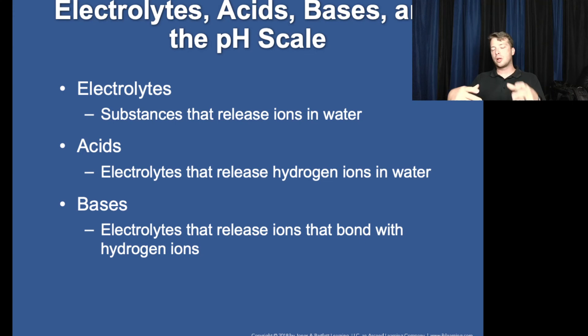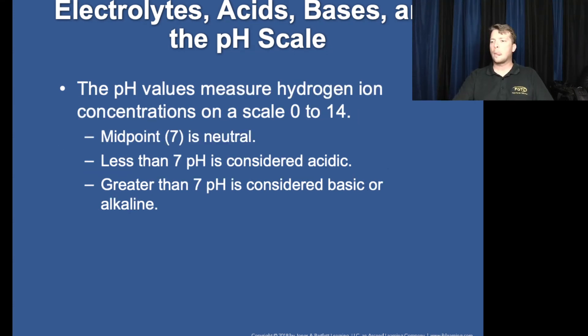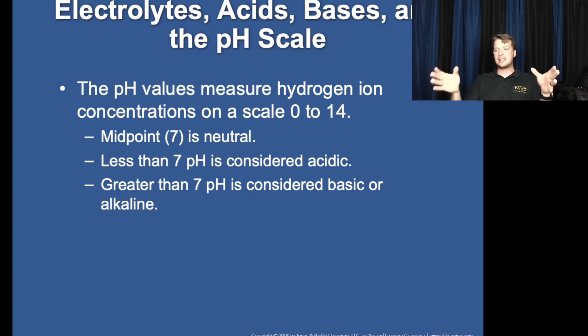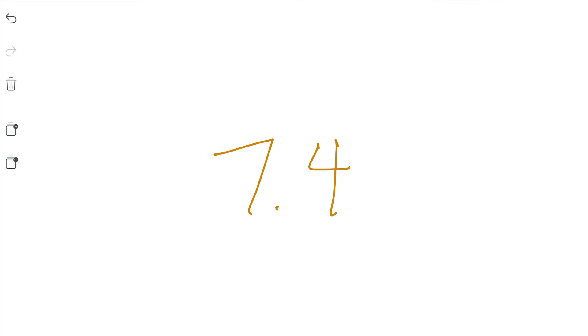A base absorbs hydrogen — it would bind to hydrogen and remove it from the water. The midpoint of the pH scale is seven. Anything below seven is acidic and greater than seven is considered alkaline or basic. But in the human body, the number you want is 7.4 — that is the normal pH of the body. The range is 7.35 to 7.45.